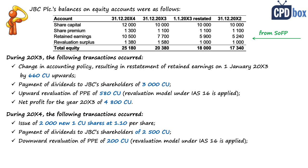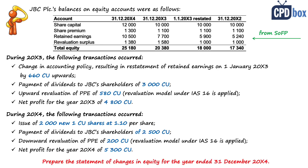Downward revaluation of property, plant and equipment of 200 currency units — note this is downward, not upward like in 20x3. Net profit for the year 20x4 is 5,300 currency units. We are asked to prepare the statement of changes in equity for the year ended 31 December 20x4, where 20x4 is the current year and we will present comparatives for 20x3, as required under IFRS 18.